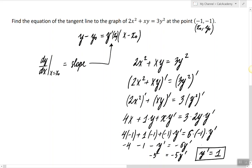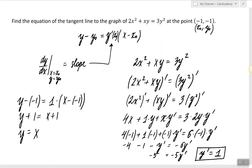So when x₀ equals negative 1 and y₀ equals negative 1, the derivative of y with respect to x is equal to 1. And now we have everything to write the equation of the tangent line. So it's going to be y minus negative 1 equals 1 times x minus negative 1. Simplifying everything, y equals x is the equation of the tangent line to the graph of the given function at the given point.